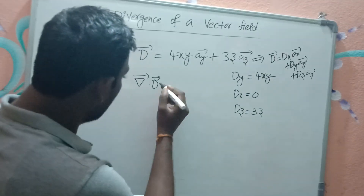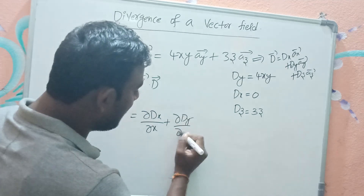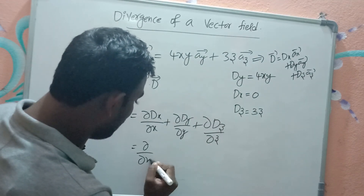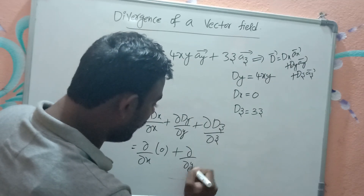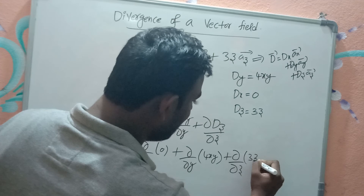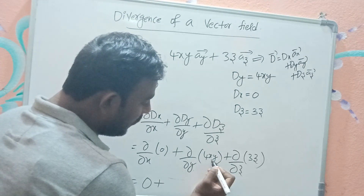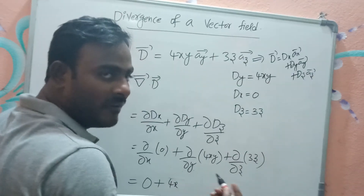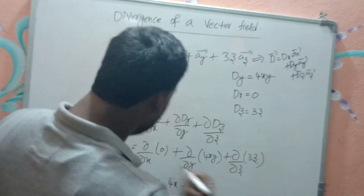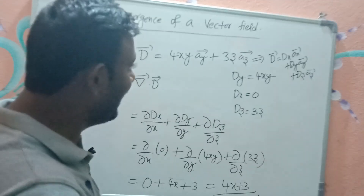Now del-bar dot D-bar = ∂Dx/∂x + ∂Dy/∂y + ∂Dz/∂z. Substituting: ∂(0)/∂x + ∂(4xy)/∂y + ∂(3z)/∂z. The first term is 0. For the second, 4x is constant so ∂(4xy)/∂y = 4x. For the third, ∂(3z)/∂z = 3. So del-bar dot D-bar = 4x + 3, which is a scalar result.